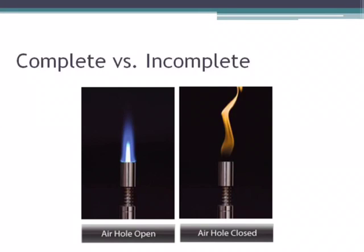Looking at this picture, we can see that this happens with Bunsen burners. In a complete combustion reaction, the Bunsen burner flame is usually nice and blue. If it's incomplete, we get a yellow flame. In general, when we are doing labs, we want to see the nice blue flame in our Bunsen burner.